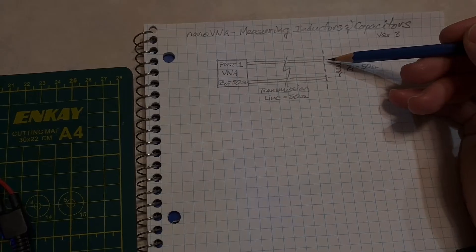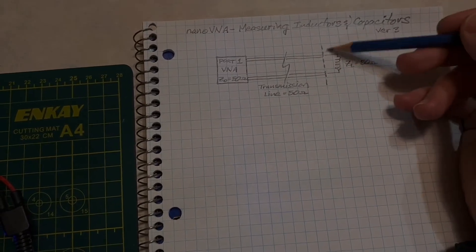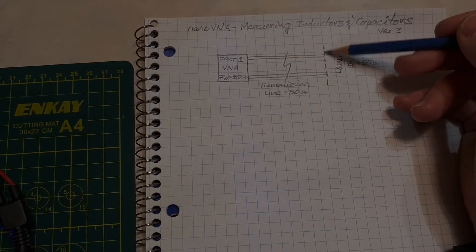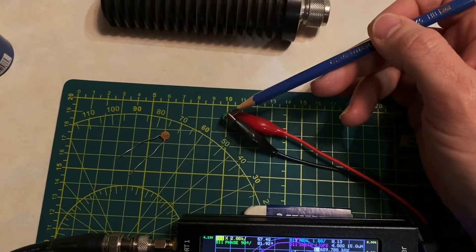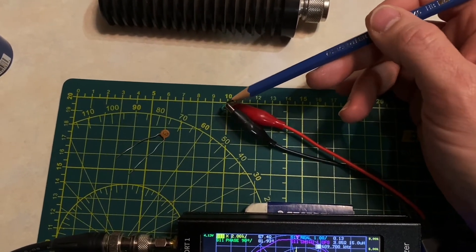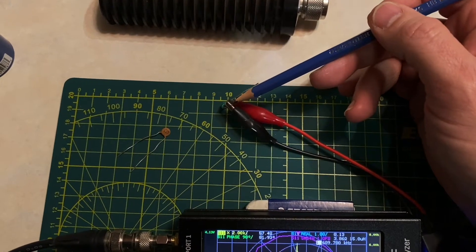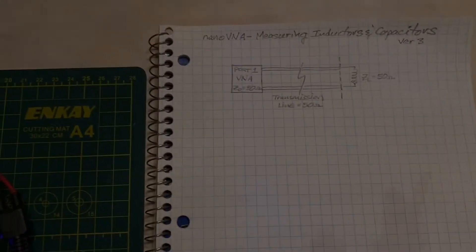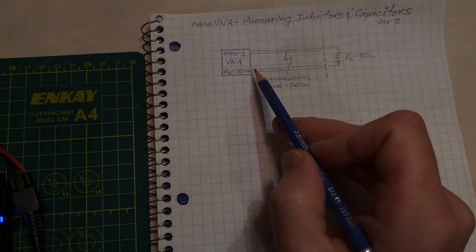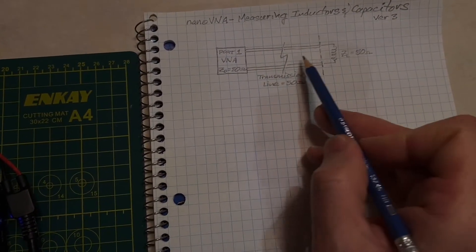This, by the way, is the reference plane where I've calibrated the Nano VNA to examine the device under test with reference to this plane. That calibration plane is right here at the end of these alligator clips. I'll show you how I did that in a second. It's very simple.